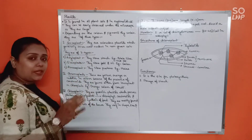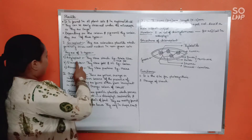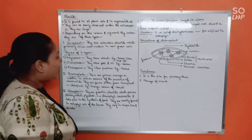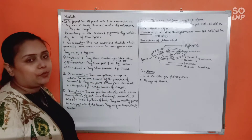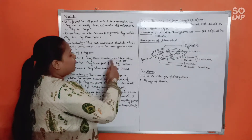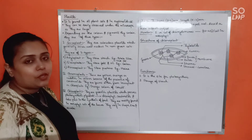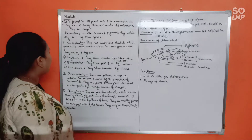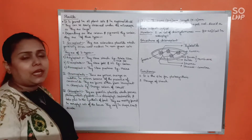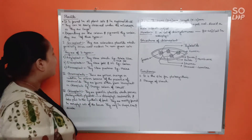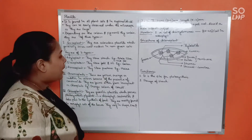Leucoplasts can be of three types based on what they store. Amyloplasts store mainly starch or carbohydrates - for example, they are found in potato tubers and rice grains. Elaioplasts, also sometimes referred to as oleoplasts, store fats and oils, and are found in oil-containing seeds like castor.